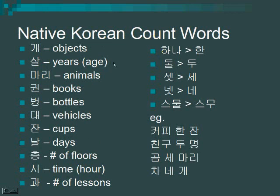With native Korean count words, certain numbers change form: 하나 becomes 한, 둘 becomes 두, 셋 becomes 세, 넷 becomes 네, and 스물 becomes 스무 — all when used directly in front of a count word.